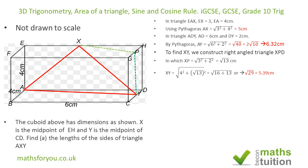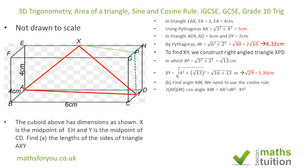We've now got all three sides. For the second section we need to find angle XAY. We know all three sides but no angles, so this calls for the cosine rule. The cosine rule states that 2 times the product of AX and AY times the cosine of angle XAY equals AX squared plus AY squared minus XY squared, where XY is the side opposite the angle we're looking for.